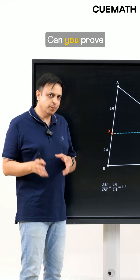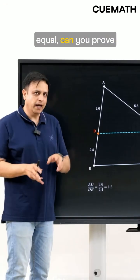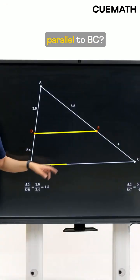And now here's a challenge for you. Can you prove the converse of this theorem, which means that if the two ratios are equal, can you prove that DE will be parallel to BC?